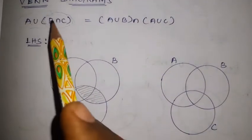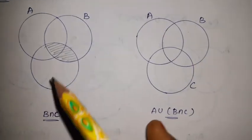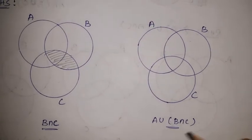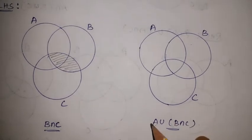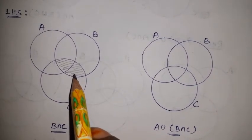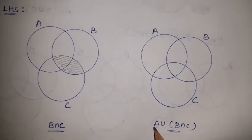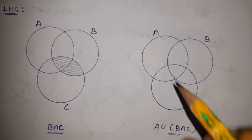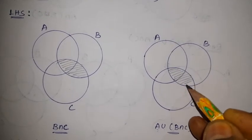The left hand side bracket is solved. Next, we solve A union (B intersection C). B intersection C is already solved as the first diagram. Now we take the union with A, adding Set A to that shaded region. The B intersection C part is marked, and Set A is also marked. This gives us the second diagram for the left hand side.